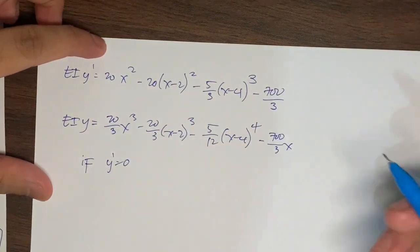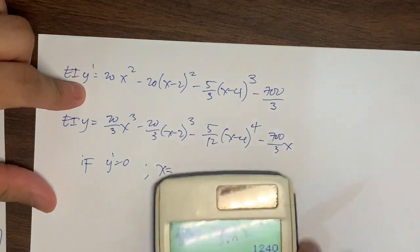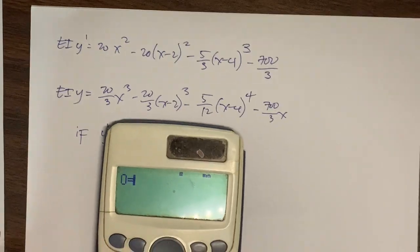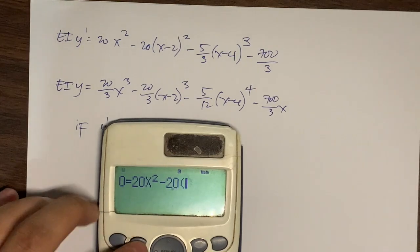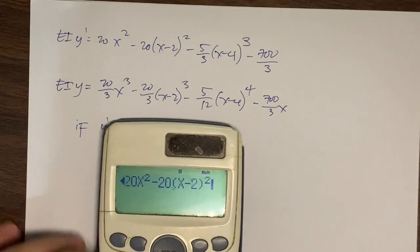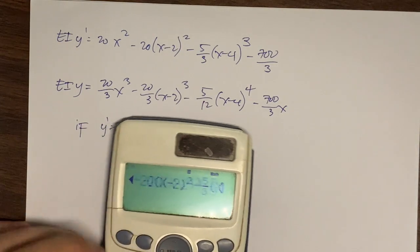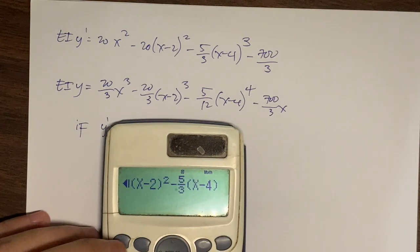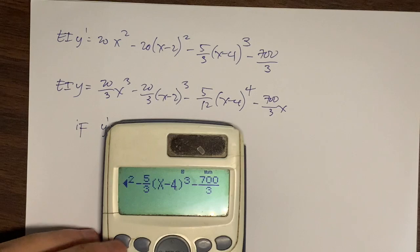Setting the slope equation equal to zero: 0 = 20x² minus 20(x minus 2)² minus (5/3)(x minus 4)³ minus 700/3. Using the calculator's shift-solve function, we get approximately x equals 3.9167 meters.